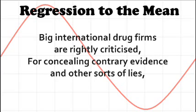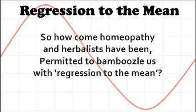Big international drug firms are rightly criticized for concealing contrary evidence and other sorts of lies. So how come homeopathy and herbalists have been permitted to bamboozle us with regression to the mean?